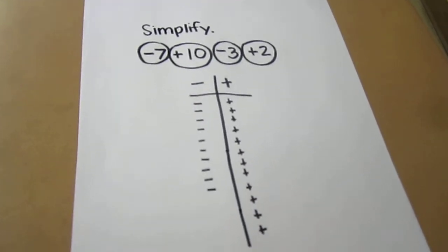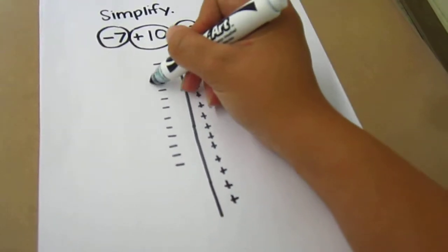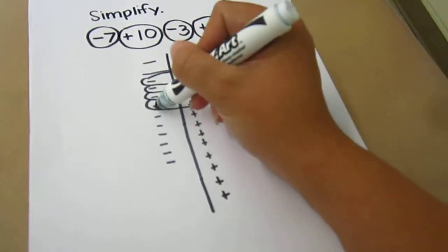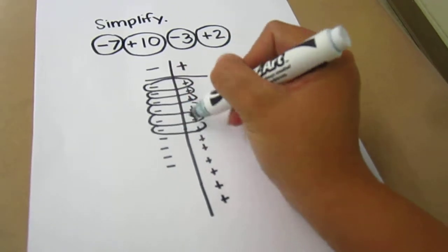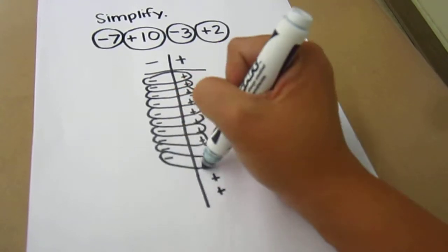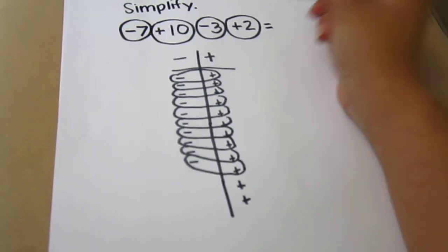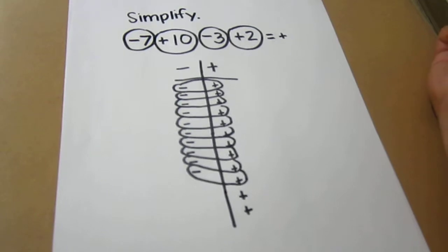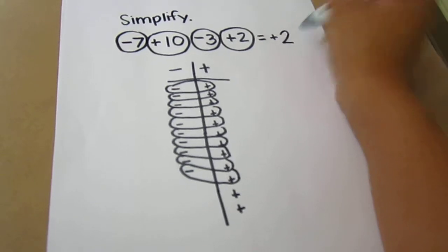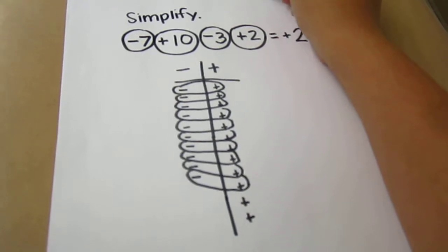In order to simplify this expression, I'm going to make zero pairs for every pair of negative and positive terms I have. I'll keep making zero pairs all the way until I have no more negatives to pair up with my positives. The sign which I have left over represents my answer. In this case I have left over positives, and because I have two left over positives, my answer is going to be positive 2. This is the first method we have called drawing integers.